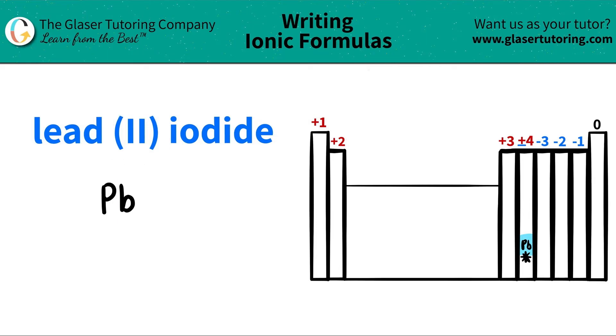Now, in this case, the Roman numeral, and remember, the Roman numeral is always the charge of the metal. The Roman numeral is telling you that lead has a plus two charge. So that's the charge that I'm going to use, not the trend of what the periodic table says. Roman numeral goes first.